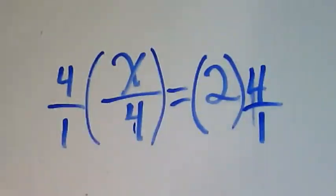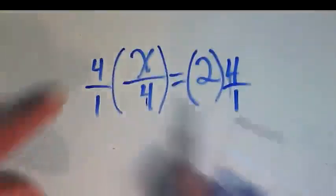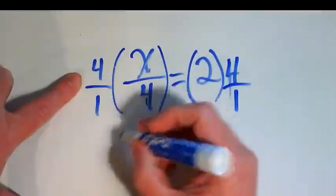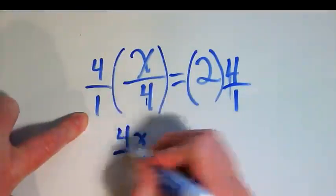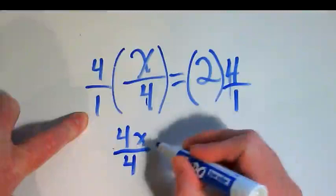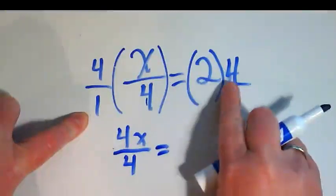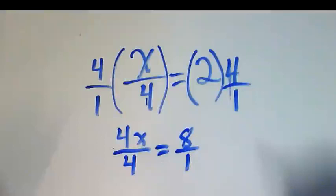Let's break down what happens when we do that. 4 times x is 4x. 1 times 4 is 4 is equal to 2 times 4 is 8 over 1.